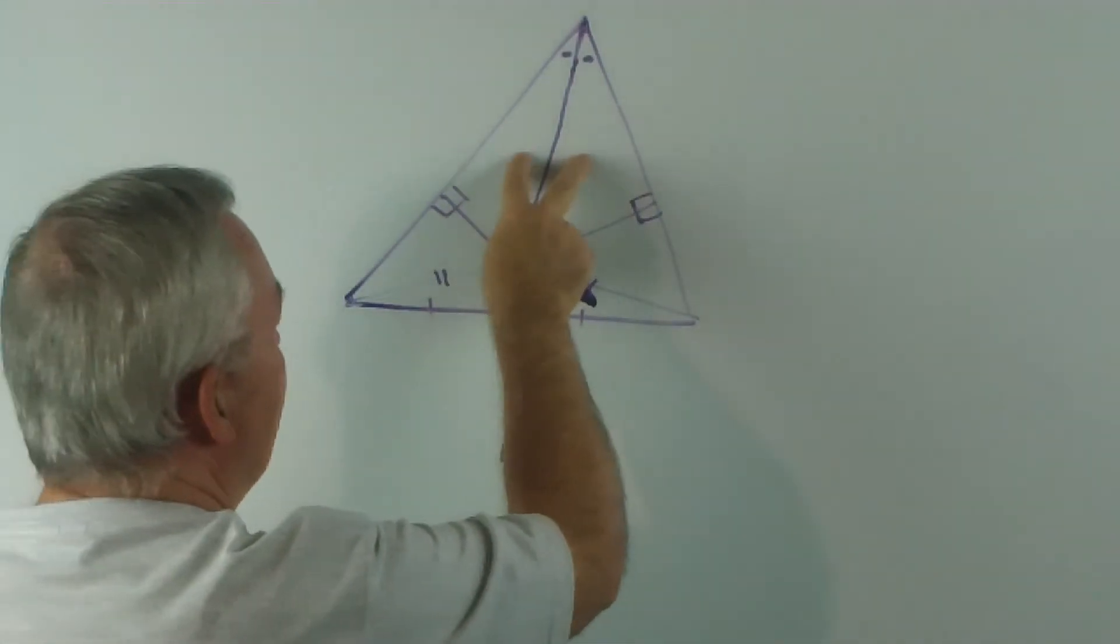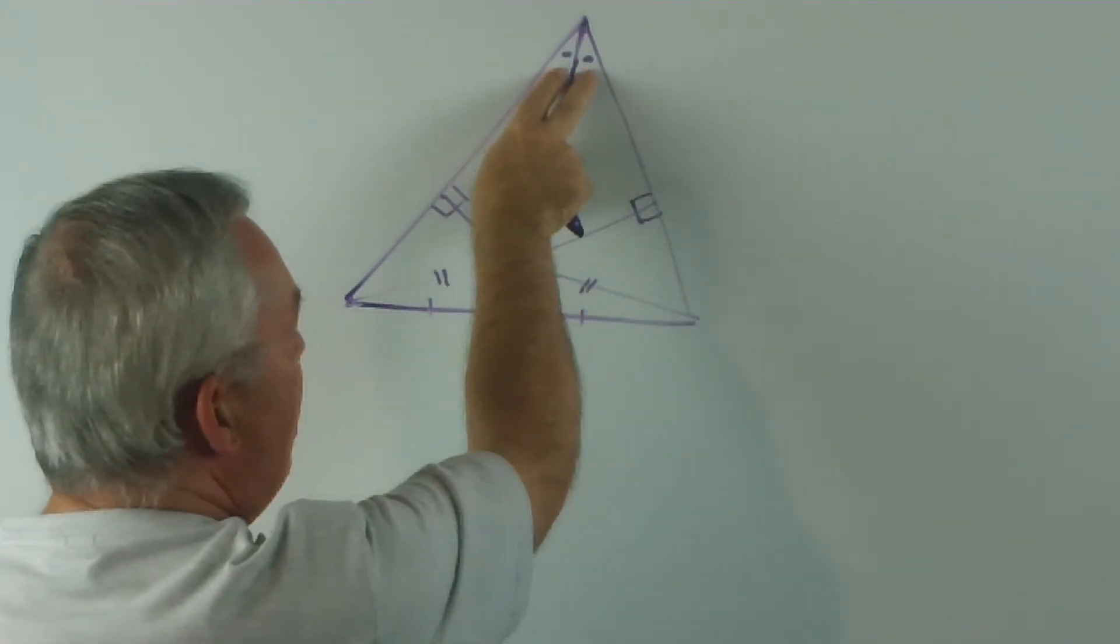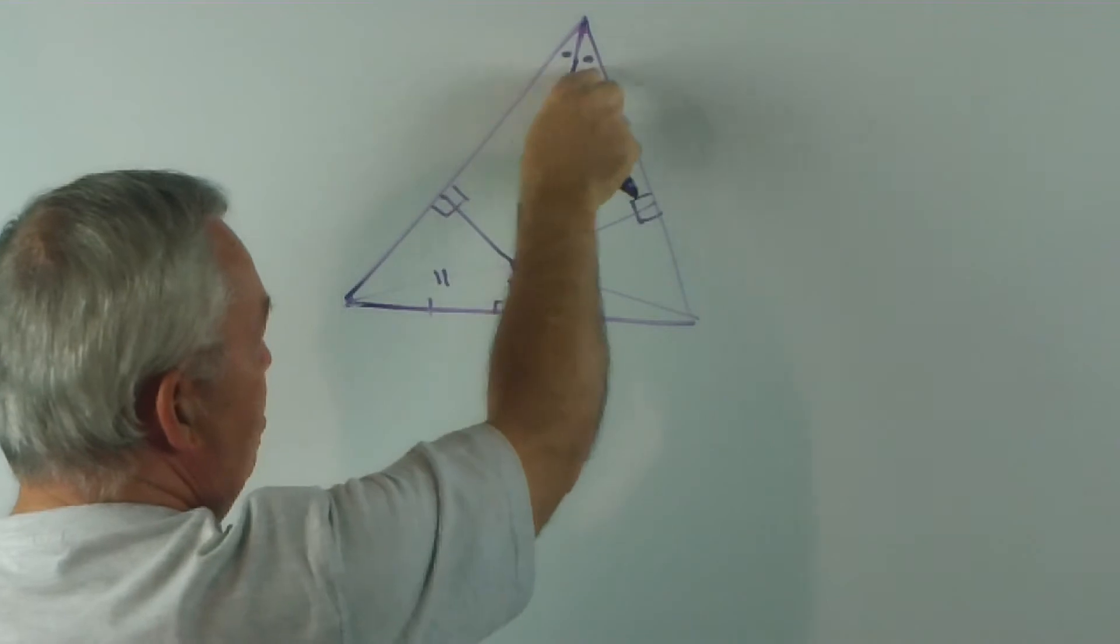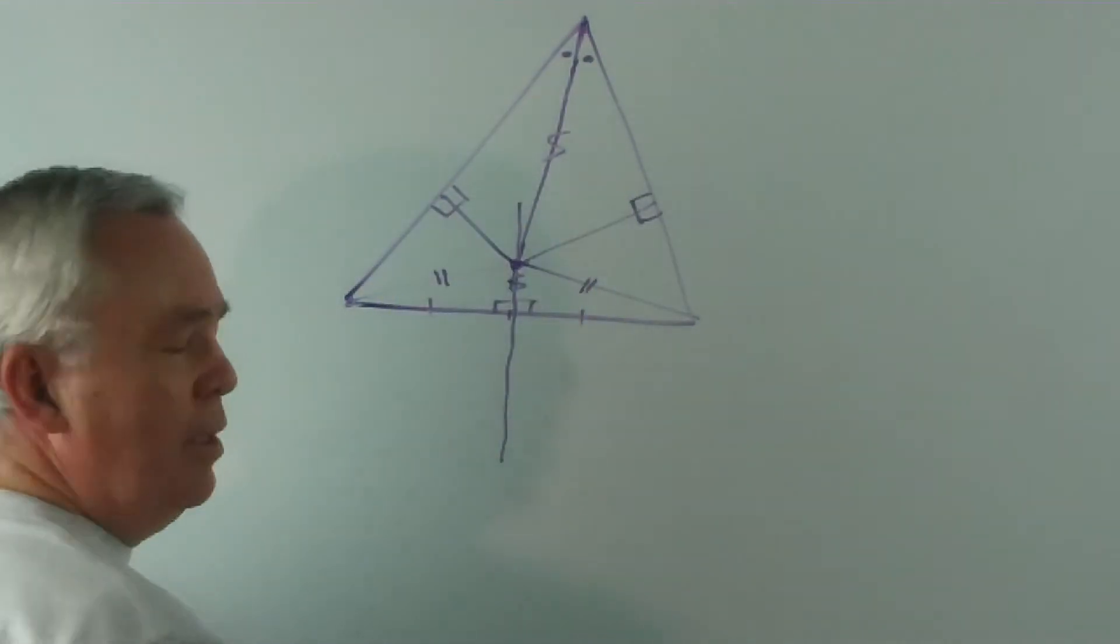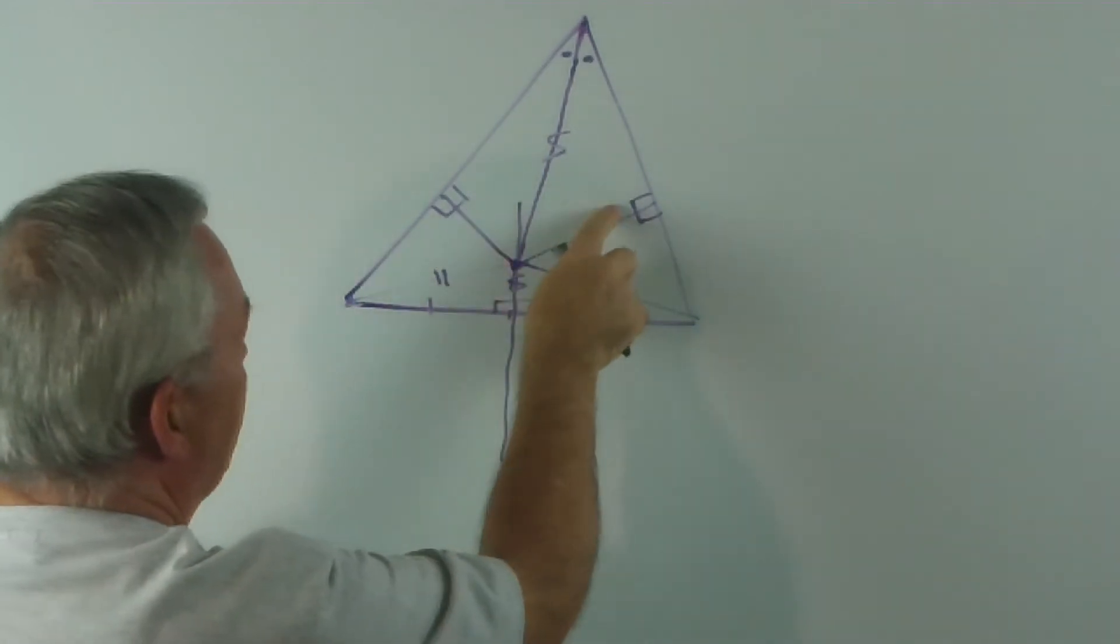Let's examine these two triangles. They have the same angle up here, because this angle up here was bisected. This side is in common, and they both have a right angle.